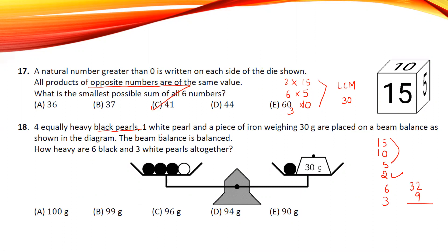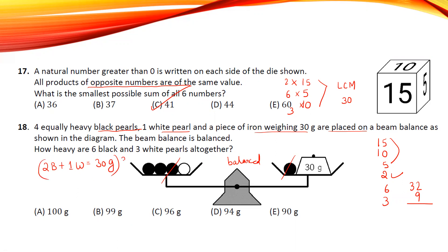There are four equally heavy black pearls, one white pearl, and a piece of iron weighing 30 grams, and the scales are balanced. We can cancel one black pearl from each side. So two black pearls plus one white pearl equals 30 grams. They ask for six blacks plus three whites — multiply by three — so the answer is 90 grams.